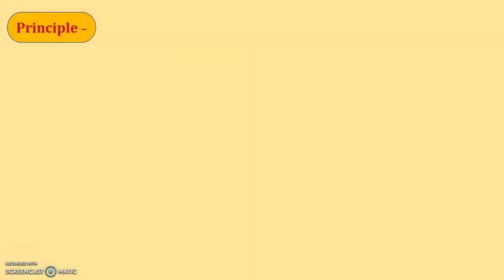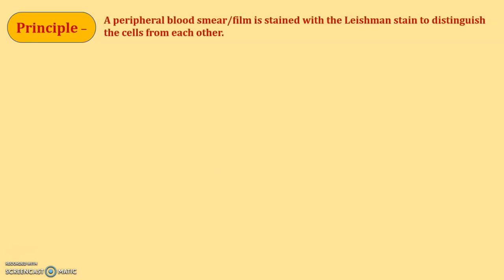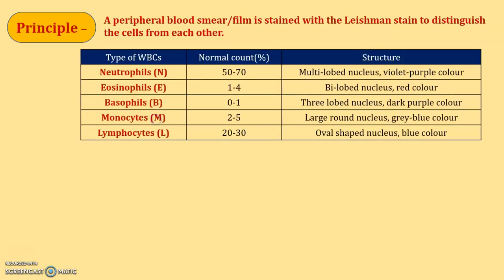The principle behind this practical: we prepare a blood smear or film on a glass slide and stain it with Leishman stain. This stain distinguishes the different cells from each other. With the help of Leishman stain, we can identify what different types of WBCs or leukocytes are present in the blood. Neutrophils are denoted by capital N and their normal count is 50 to 70 percent.